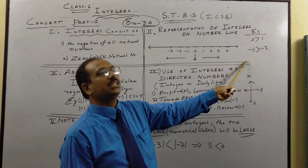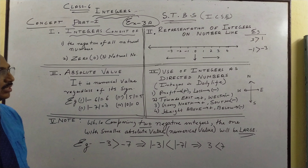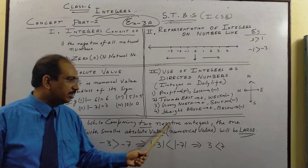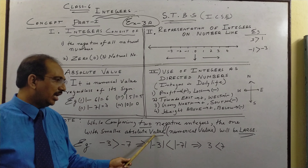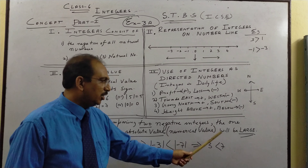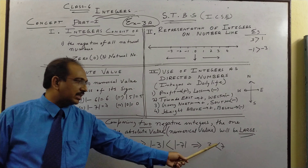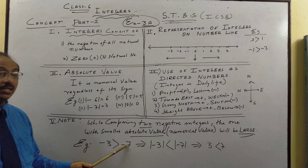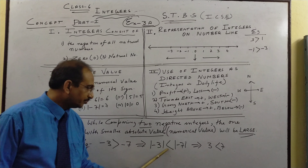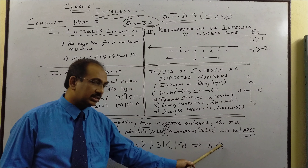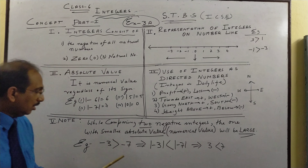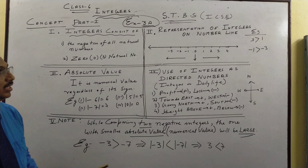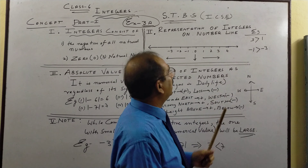The fourth concept is the use of integers as directed numbers. In daily life, profit is plus and loss is minus. In geography, going towards east is positive, coming back towards west is negative, going north is positive, going south is negative. Height above sea level is positive, below sea level is negative. We will see this concept more when we do the sums.